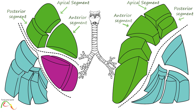The upper lobes on both sides contain three segments, namely the apical segment, posterior segment, and anterior segment. The apicoposterior segment on the left side is formed by the merger of the left apical and left posterior segments.